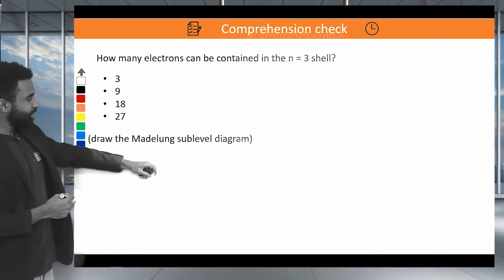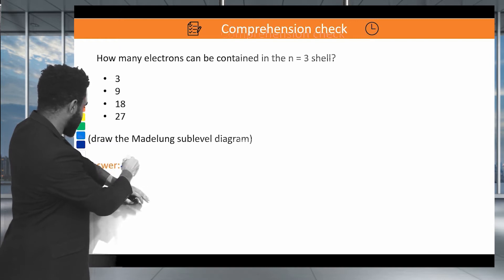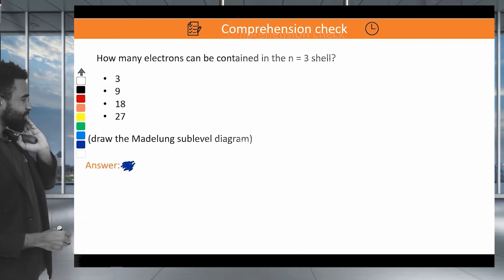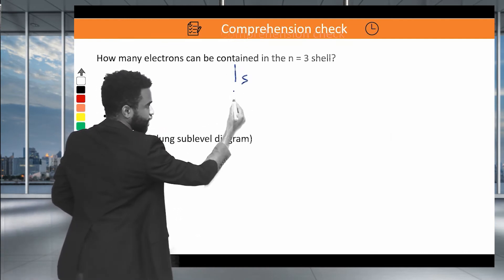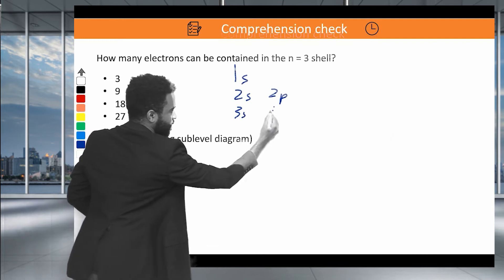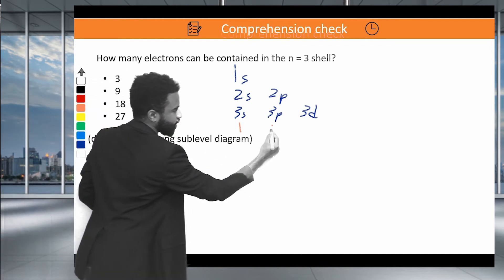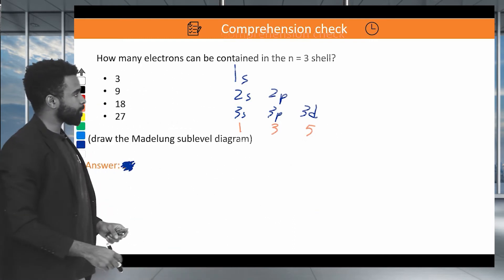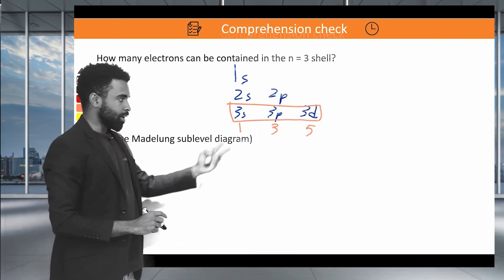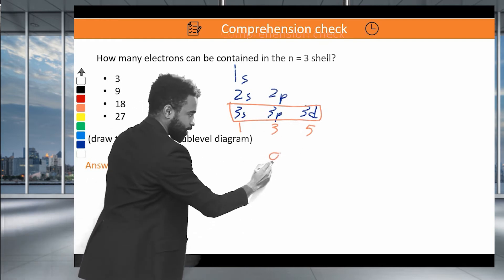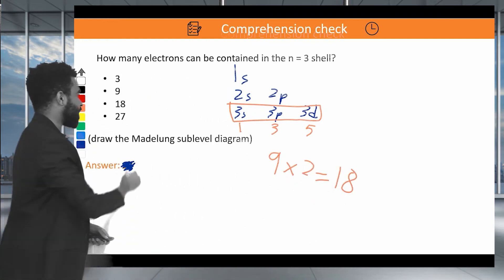How many electrons can be contained in the N equals 3 shell? Draw the sublevel diagram: 3S has 1 orbital, 3P has 3 orbitals, 3D has 5 orbitals — giving 9 orbitals total in the n=3 shell. Each orbital contains 2 electrons, giving a total of 18 electrons. So the answer is 18.